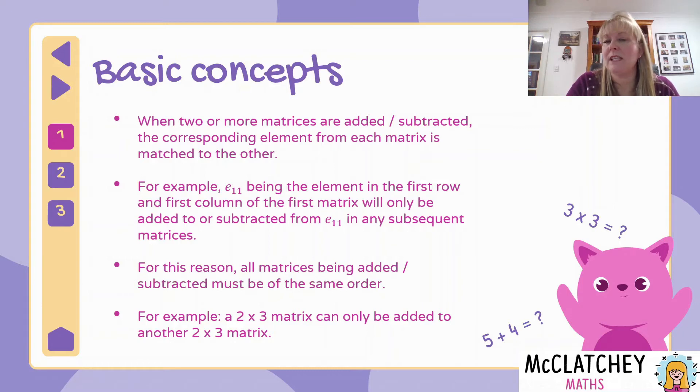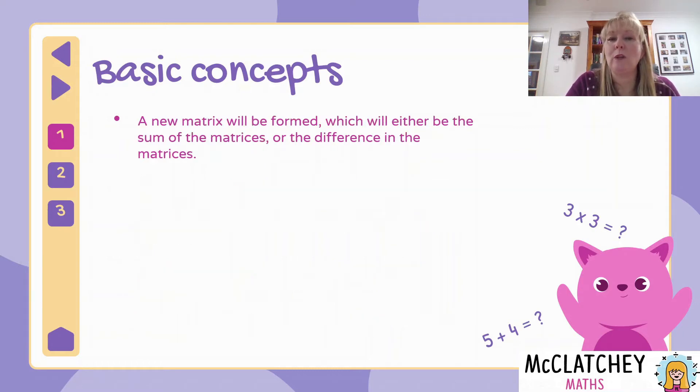They must be the same size, same number of rows, same number of columns. When you do this, you'll be forming a new matrix. So your answer is also given in the square parentheses. And that particular matrix will be the sum of the other matrices or the difference between the matrices.